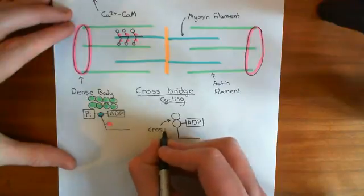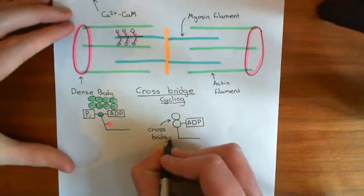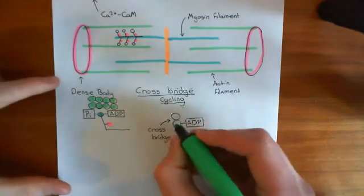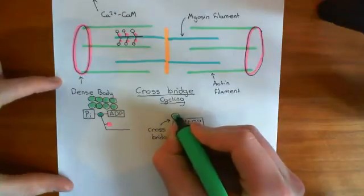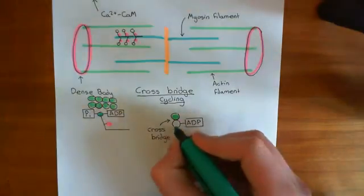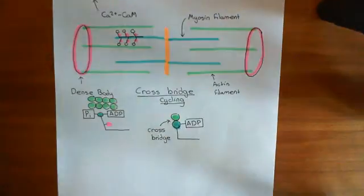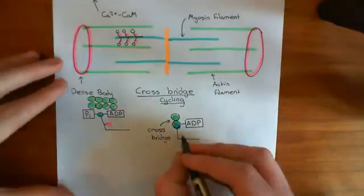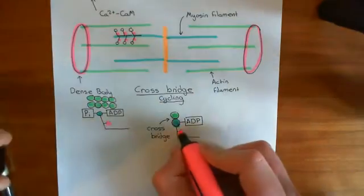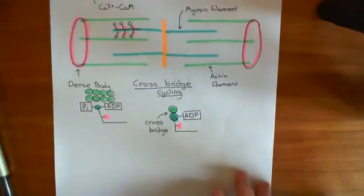So this is a cross-bridge. In order to form that cross-bridge, the myosin head has to drop the phosphate group. Here's the actin monomer and here is the myosin head, still bound to ADP. Importantly, it has this phosphate group that the myosin light chain kinase put on it, which is why it's able to do this cross-bridge cycling at all.